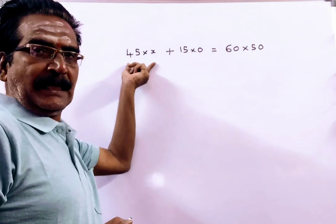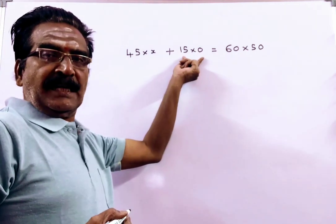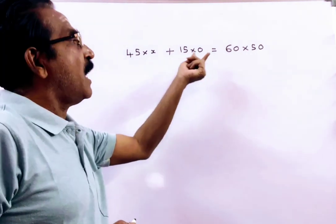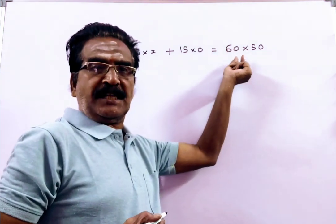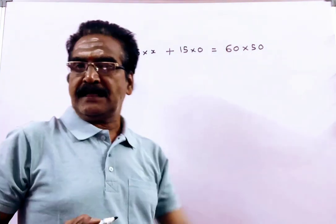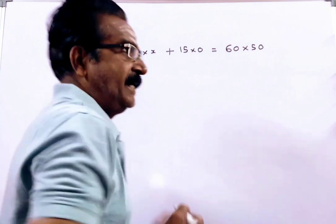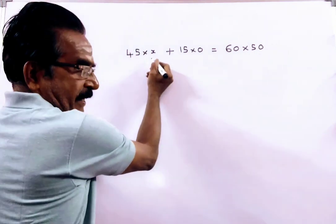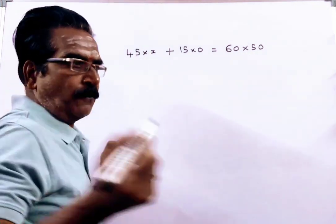45 liters of pure milk and 15 liters of water is added, now the total mixture is 60, and the price of the mixture is 50 rupees a liter. Now we have to find X to get the price of pure milk.